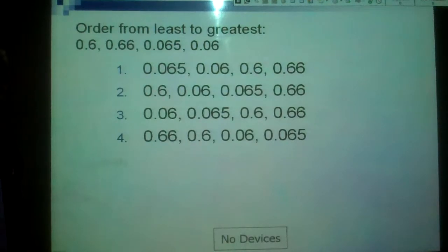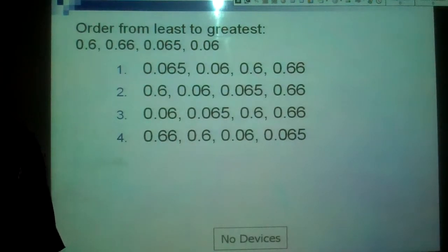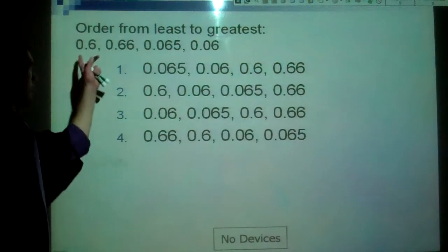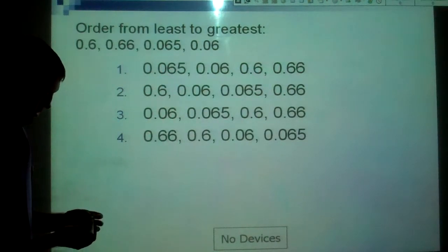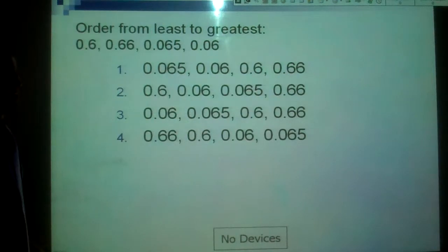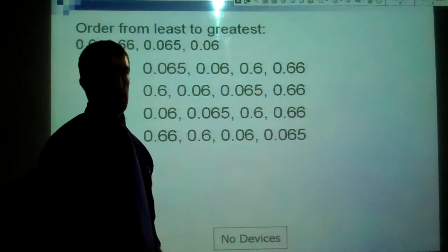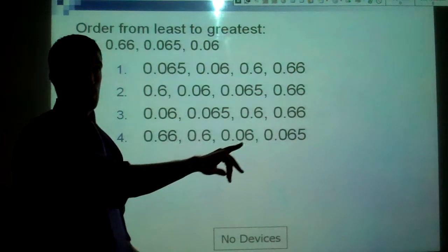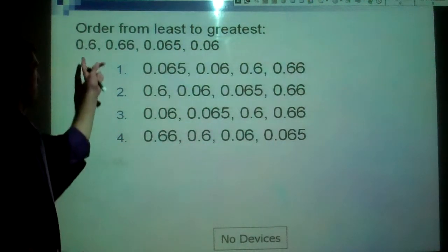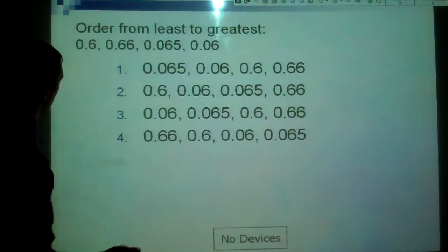Order from least to greatest. Now, I reminded the students that I gave them a hint yesterday. What I would do is I would turn all of these into percents, and that should make it a lot easier. And remember, to turn something into a percent, or a decimal into a percent, we just move our decimal place over two spots to the right. Or basically, we're multiplying each of these by a hundred.